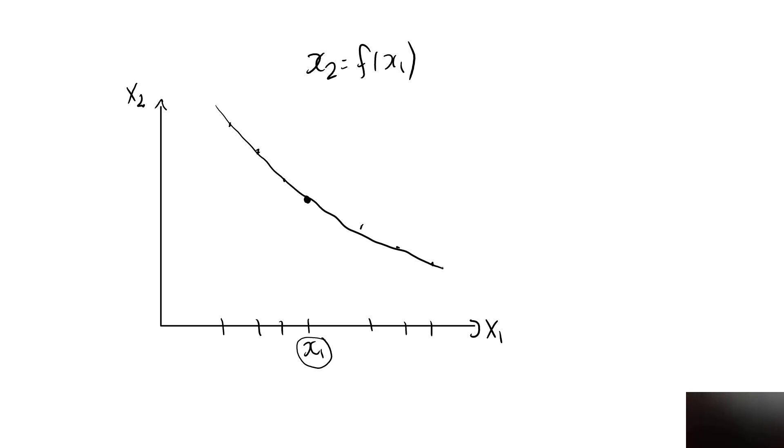With strict monotonicity, we cannot have thick indifference curves, and we cannot have elliptical indifference curves that we had when we had a satiation point. You can also see why we need strict monotonicity, and why monotonicity itself is not enough. An indifference curve such as this vertical line is consistent with monotonicity.